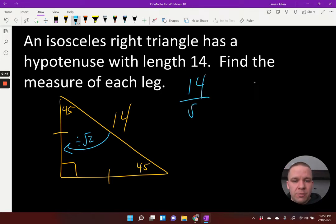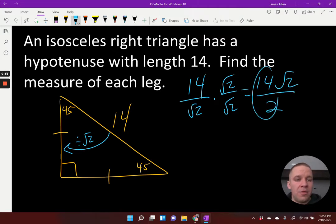So 14 divided by root 2, I got to rationalize, don't forget. Root 2 over root 2, that's going to give me 14 root 2 over 2. These can be simplified down to 7 root 2.